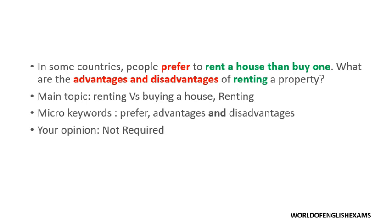Note the difference: in the previous question, it said 'agree or disagree' — the word 'or' means you focus on just one side. But here it says 'advantages and disadvantages,' meaning 'and' — you need to focus on both. And your opinion is not required; you just need to specify the advantages and disadvantages. That's it.